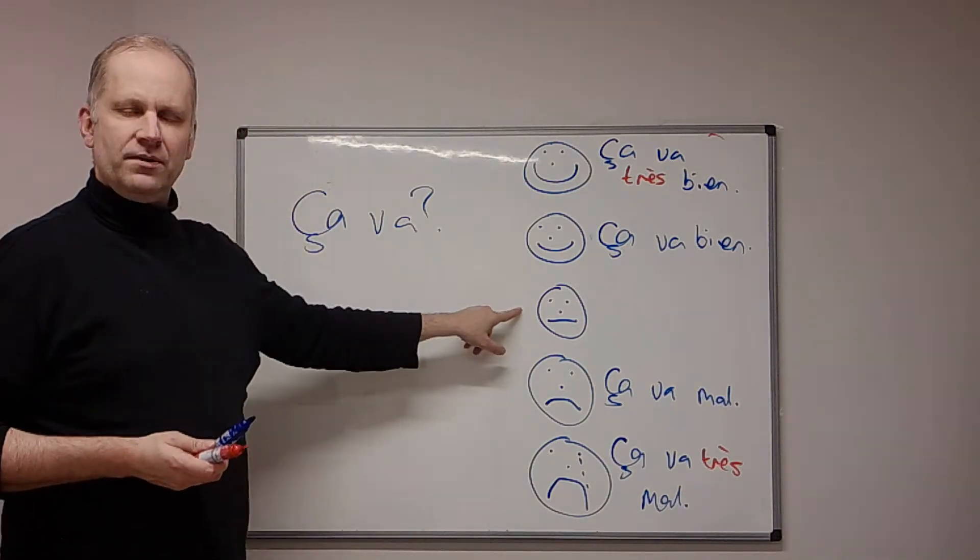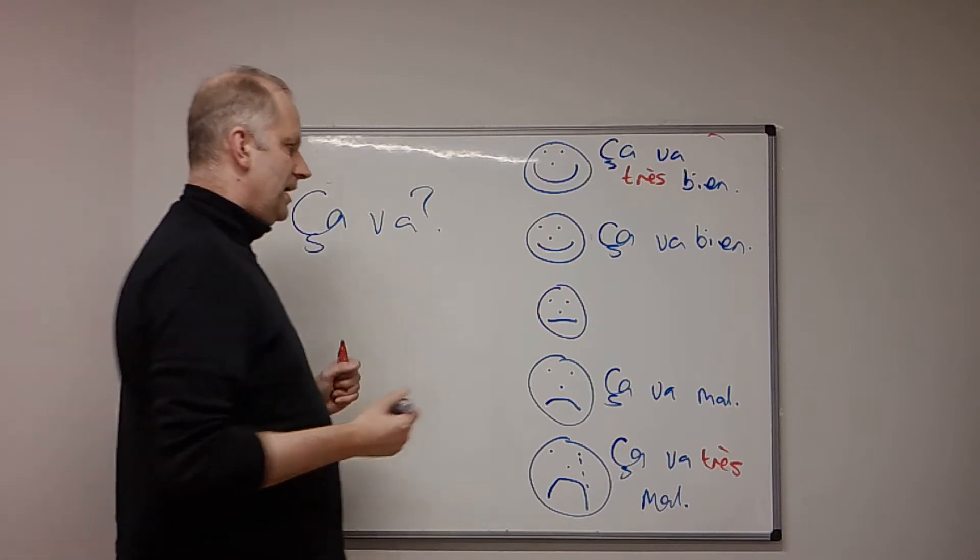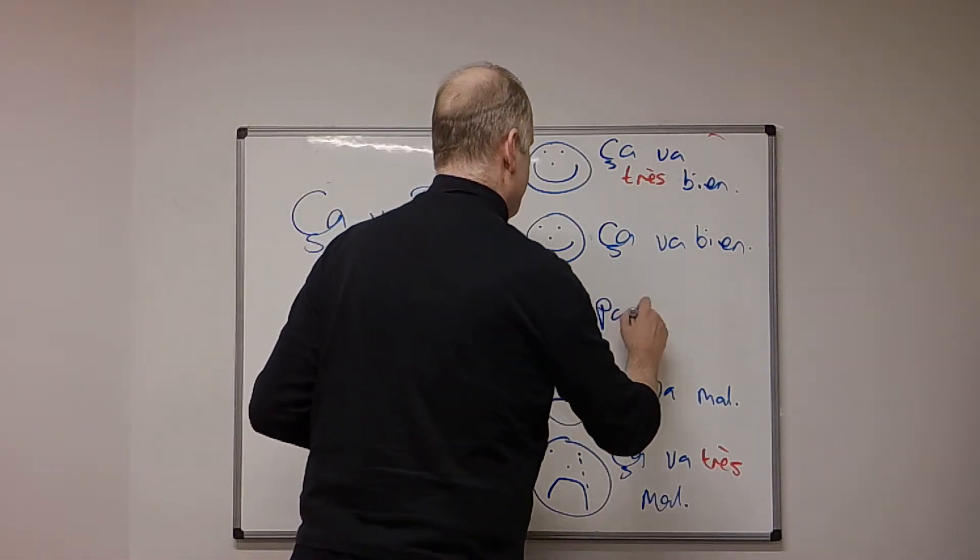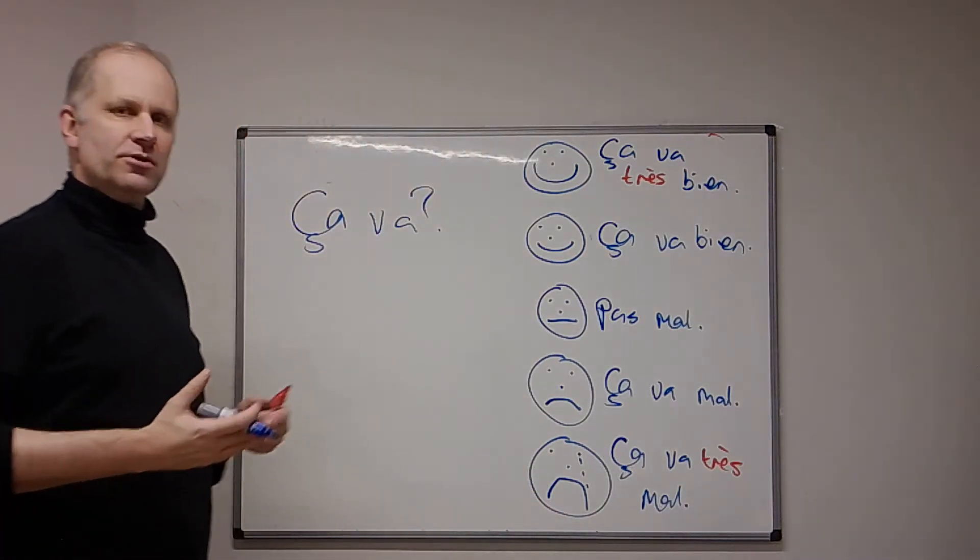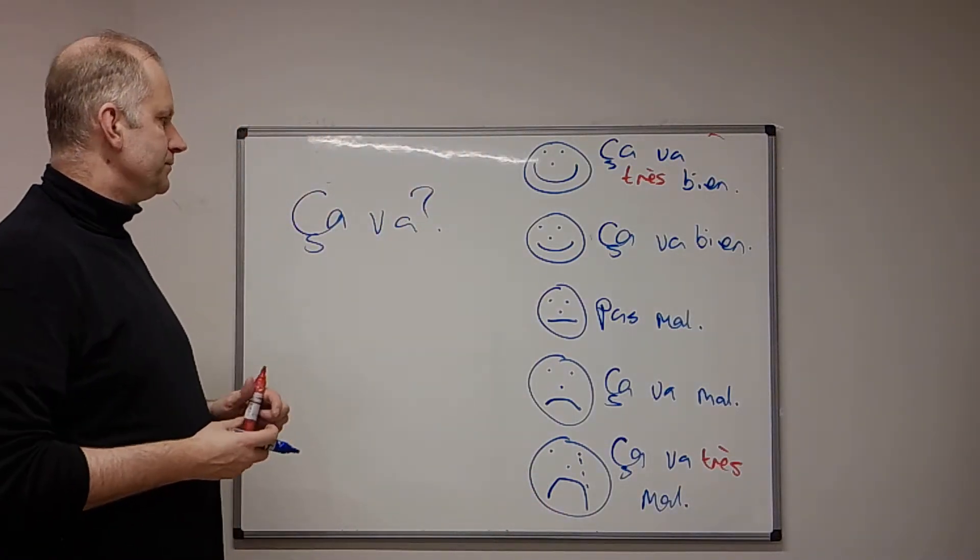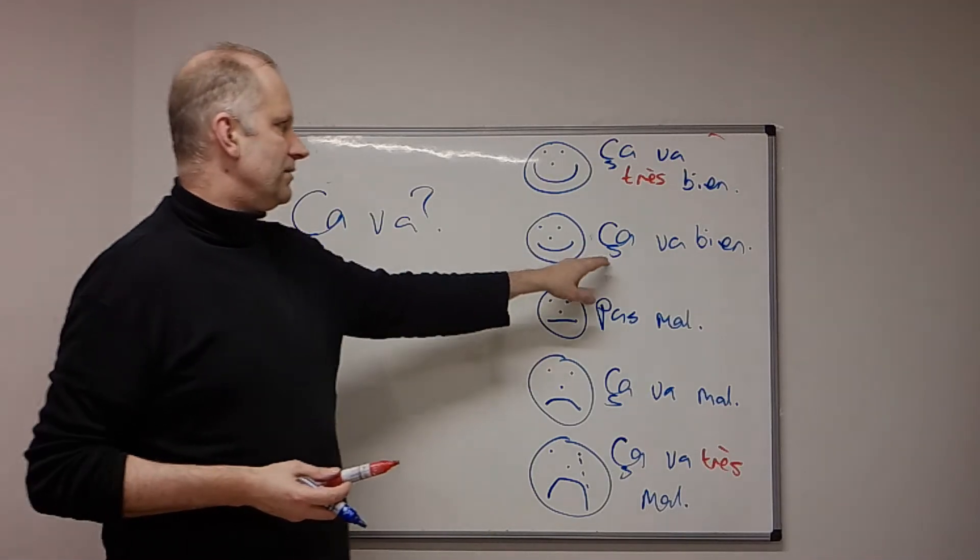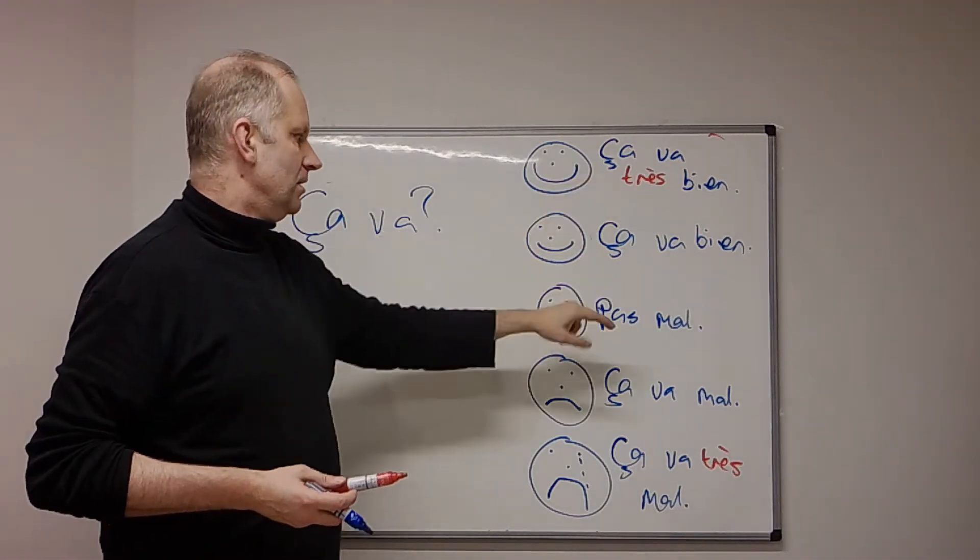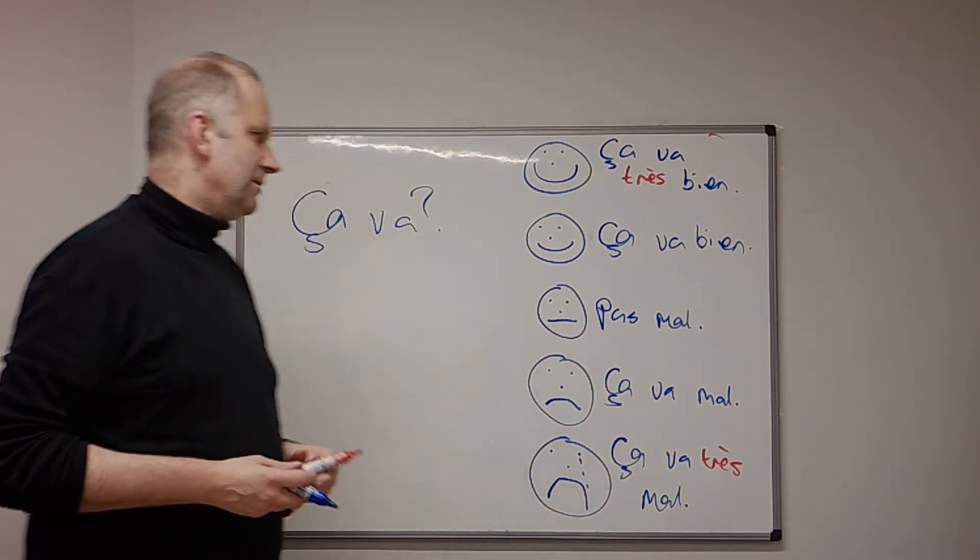What about the one in the middle, sort of, not bad, mustn't grumble. Or, we just say not bad, so, pas, pas mal. It's kind of, neither good nor bad. Okay. So, somebody asks you, it says, ça va, you can say, ça va bien, ça va très bien. Or, pas mal, ça va mal, ça va très mal.